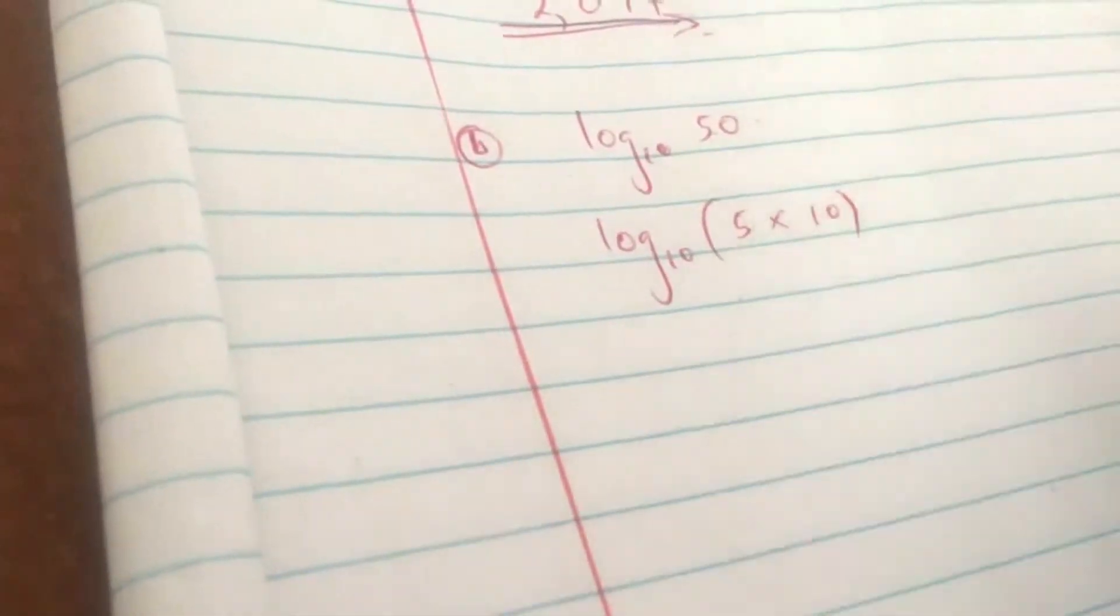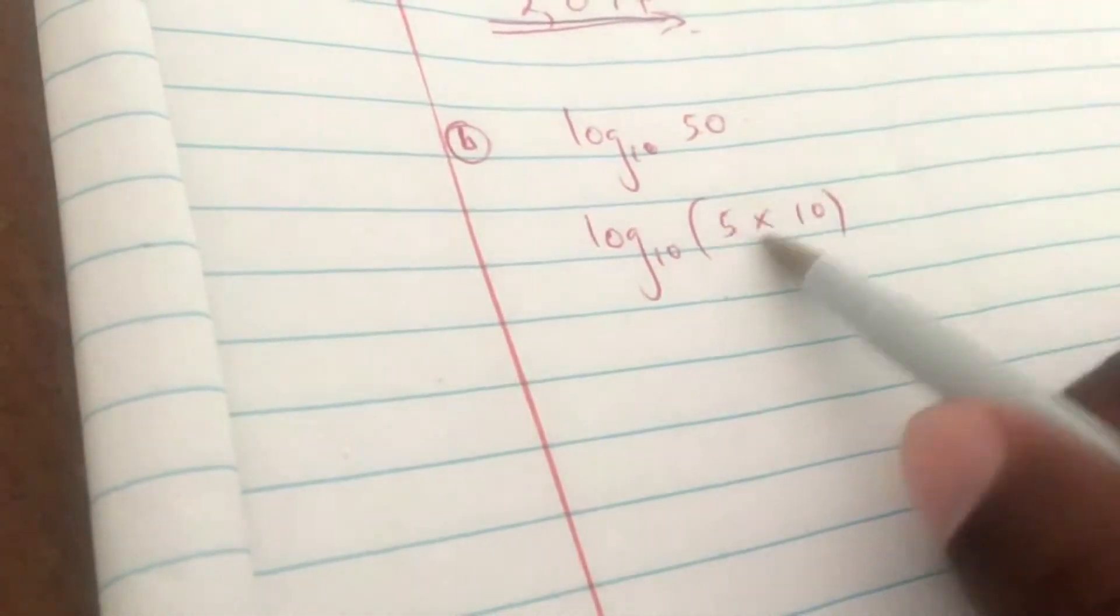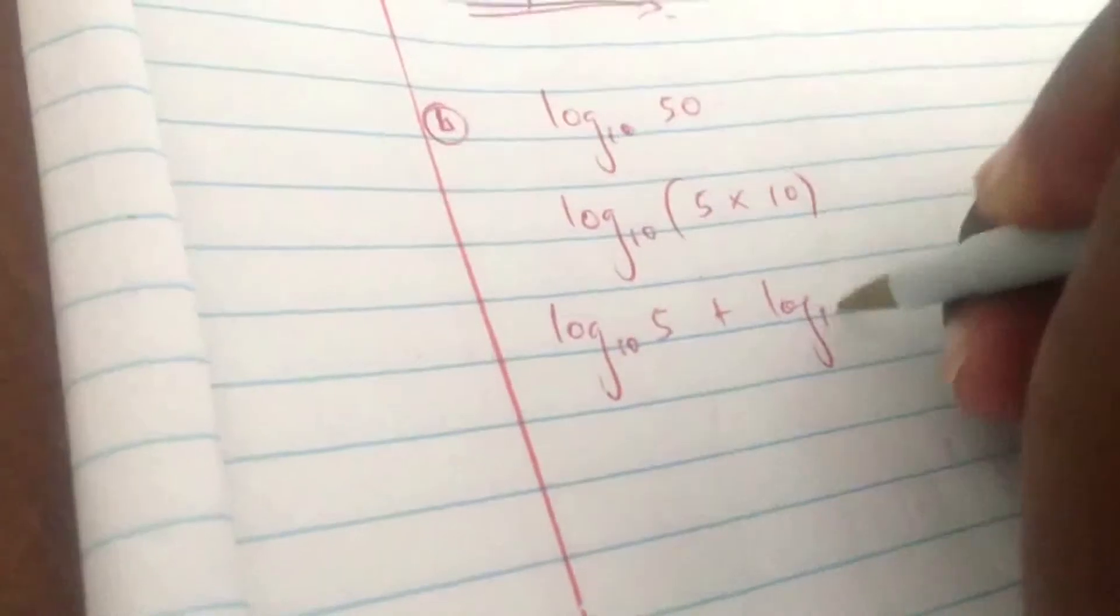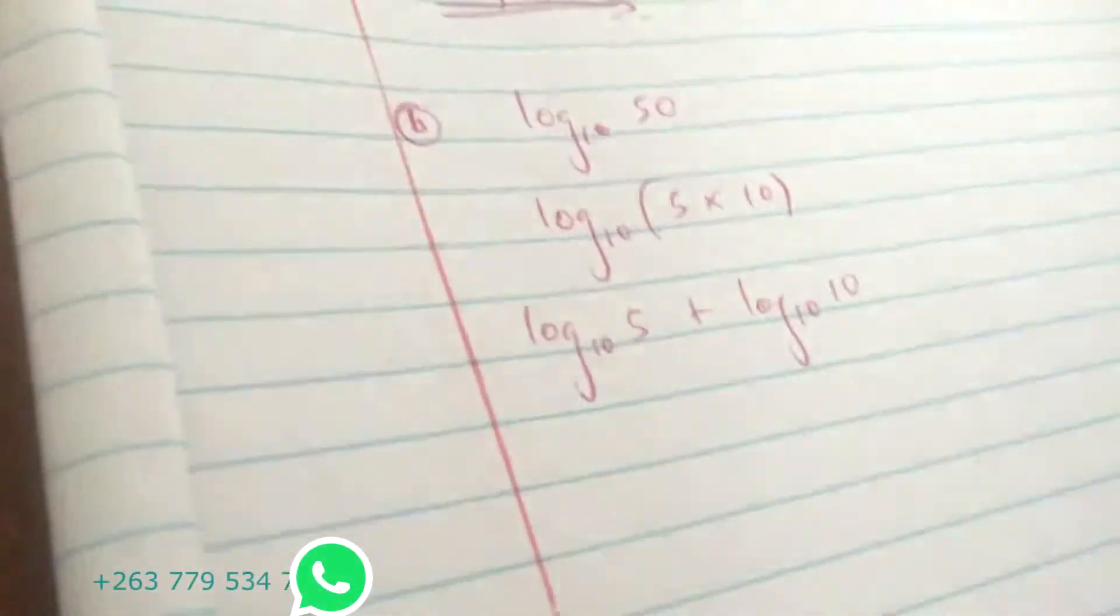Now the 50 can be expressed as 5 by 10, so this is log base 10 of open bracket 5 multiplied by 10. So now you have 2 numbers multiplying with a common logarithm, so to split this, when you're multiplying you want to add the 2. So it's log base 10 of 5 plus log base 10 of 10.